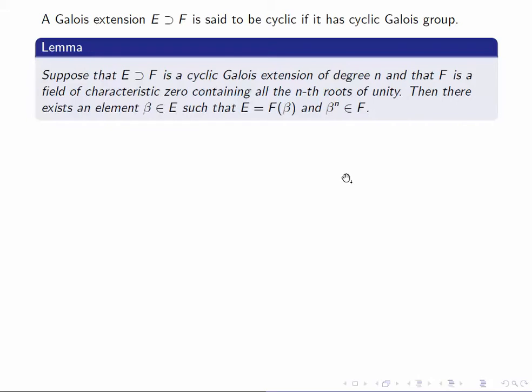Let's first look at a simple lemma. Suppose we have a cyclic Galois extension of degree n, and that F, the base field, contains all the nth roots of unity. Then there exists an element beta in E such that E is generated over F by beta and beta to the n is in F. In other words, E is generated over F by an nth root.